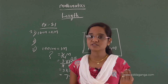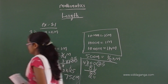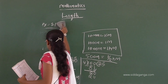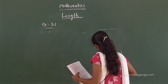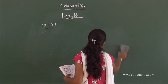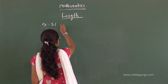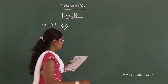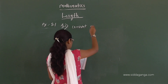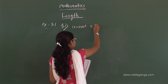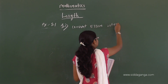Solve the following — let's take them one by one. Second section, first one: convert 573 centimeters into meters.